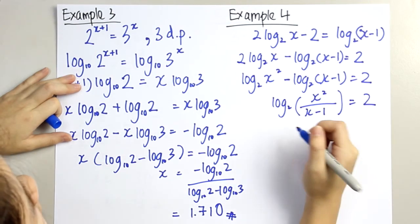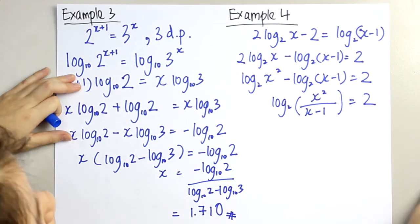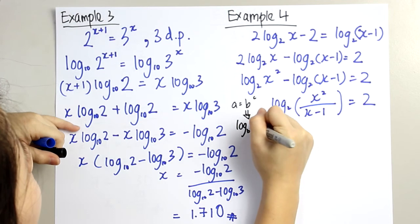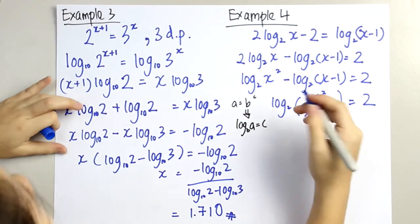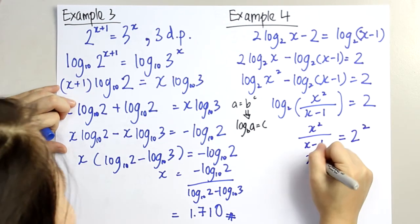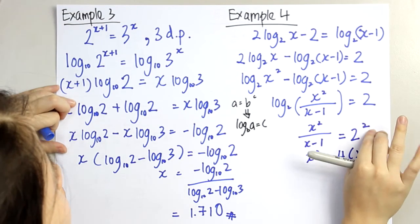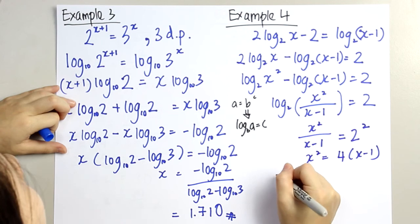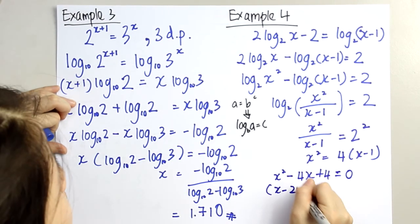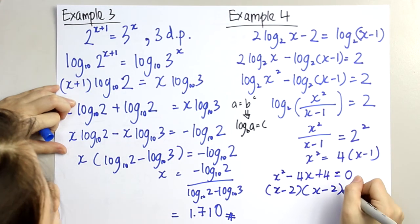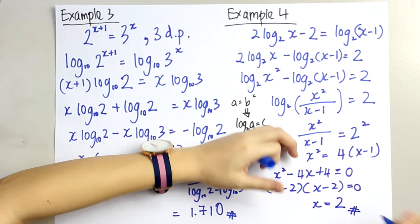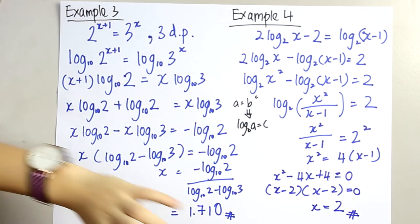According to the laws of logarithms, when log base b of a equals c, it means a equals b to the power of c. Therefore, x squared over (x minus 1) equals 2 to the power of 2, which is 4. So x squared equals 4 times (x minus 1). Grouping them together gives a quadratic equation: x squared minus 4x plus 4 equals 0. Factorizing: (x minus 2)(x minus 2) equals 0, so x equals 2. These are the four main types of questions for logarithms.